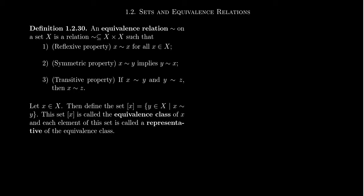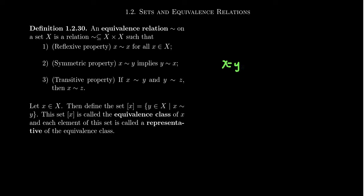The second property is the symmetric property, which says that if X is related to Y, then Y is related to X. The order doesn't matter — who's on the left, who's on the right doesn't matter whatsoever. This is again a property we see with equality: if X equals Y, then Y equals X. Equivalence relationships are generalizing this principle.